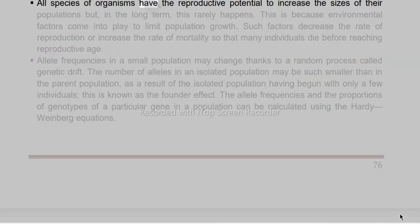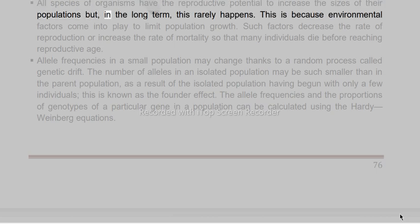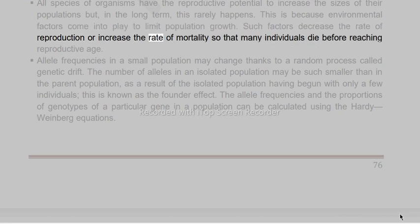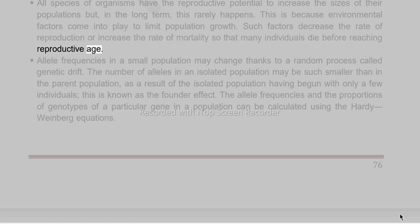All species of organisms have the reproductive potential to increase their population sizes, but in the long term this rarely happens. Environmental factors come into play to limit population growth, decreasing the rate of reproduction or increasing the rate of mortality so that many individuals die before reaching reproductive age.